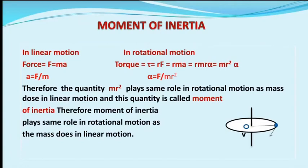Similarly, in rotational motion, if we want to produce angular acceleration of a body, we have to apply torque. The magnitude of torque is tau = r × F. Since F = ma, we get tau = r·m·a. Using the relation a = r·alpha, we get tau = m·r²·alpha. Therefore alpha = tau / (m·r²), and the quantity m·r² plays the same role in rotational motion as mass does in linear motion.